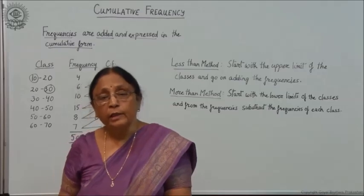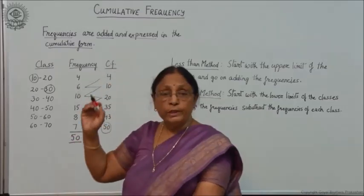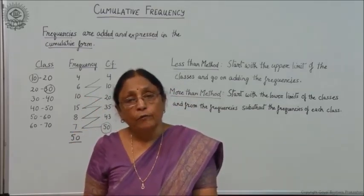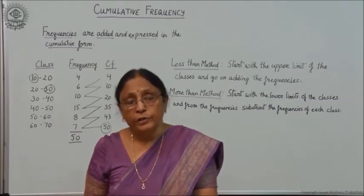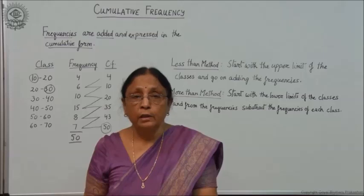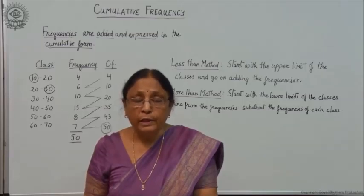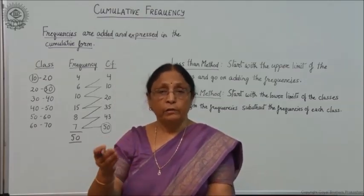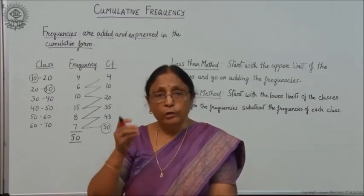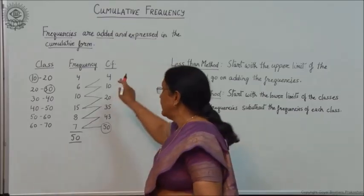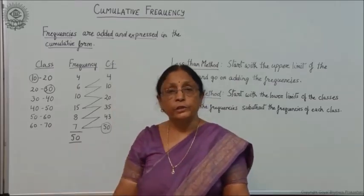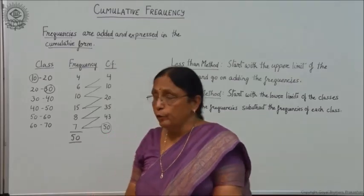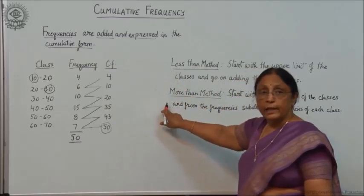Cumulative frequency is also needed when you are calculating measures of central tendency — that means averages, or you can say mean, median, mode, or quartile deviation, etc. All these types of calculations we will do in the later chapters. Whenever you are doing all these types of calculations, cumulative frequency will make your calculation easier. The data is compacted in the form of cumulative frequency, and there are two methods: less than and more than.